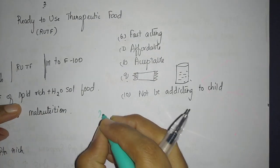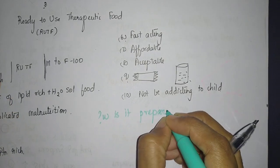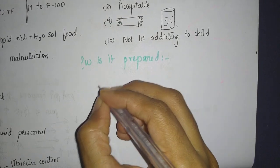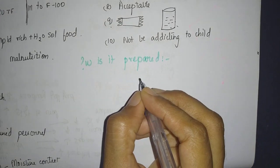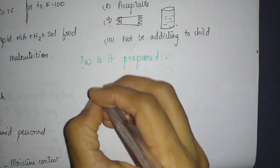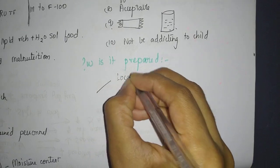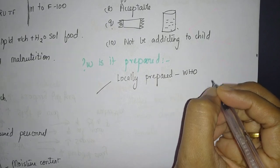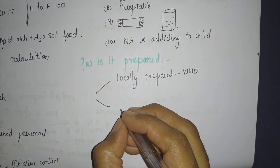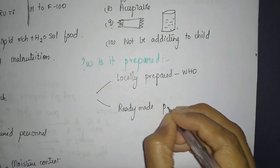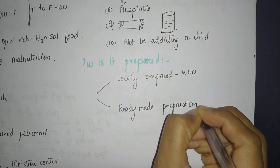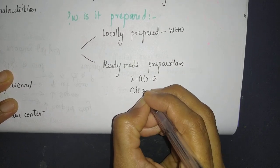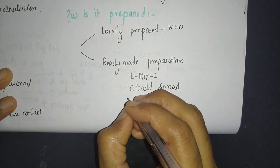How is it prepared? We saw that it is similar to F-100, but F-100 needs some preparation and cooking, whereas RUTF requires minimal cooking for preparation but otherwise doesn't need much for using. It can be either locally prepared—this is what WHO ideally recommends, using whatever local ingredients are there to meet the advised calorie and protein amounts—or ready-made preparations are available. What are the ready-made preparations? Some examples are K-mix 2, Cetadel spread...